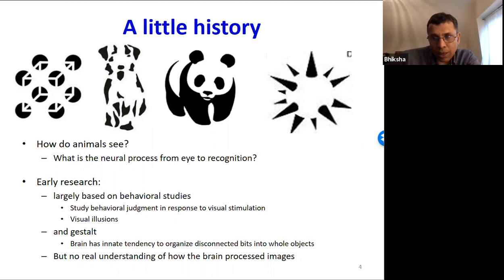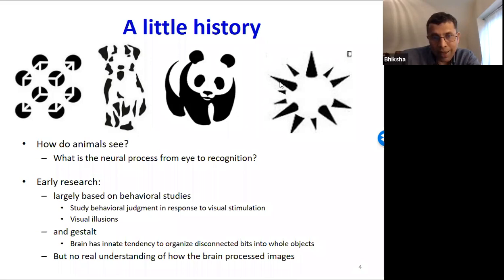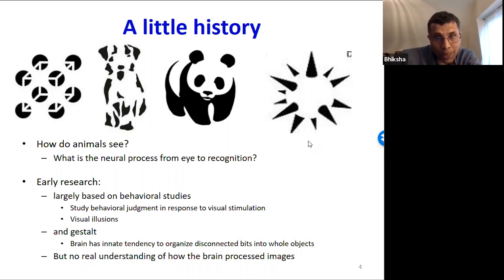Much of early studies on vision focused on this kind of behavioral analysis. But behavioral studies don't really get at how the brain actually performs these interpretations — how do you see a collection of conical-looking things and actually perceive a spike and a ball when there is no ball and no spike?